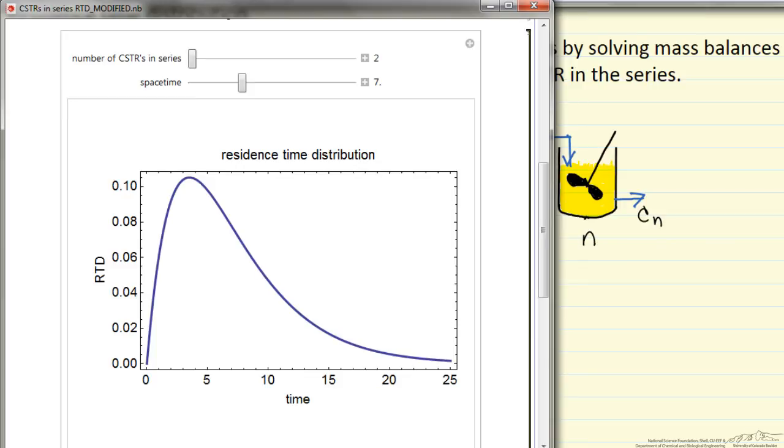but the total residence time for the system doesn't change. Of course, if it was one reactor, we have just an exponential decay. When we have two reactors,